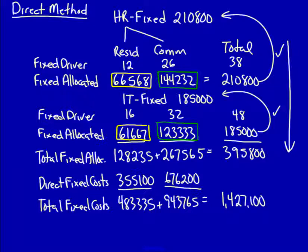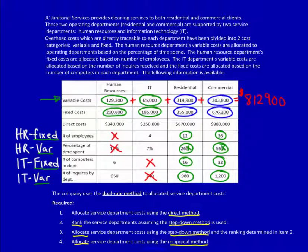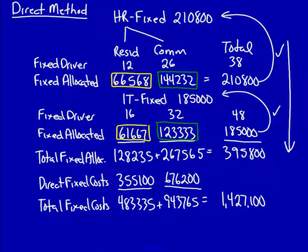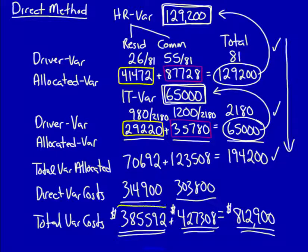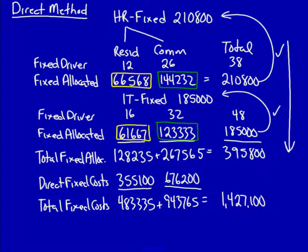Let's see if that's correct — if we add all the fixed costs together we get 1,427,100 — perfect. The problem is we're still missing one important piece of information. What we really want is the total costs that the operating departments have to cover with regards to pricing their products or services. That means we've got to add two things together: the total variable costs and the total fixed costs.